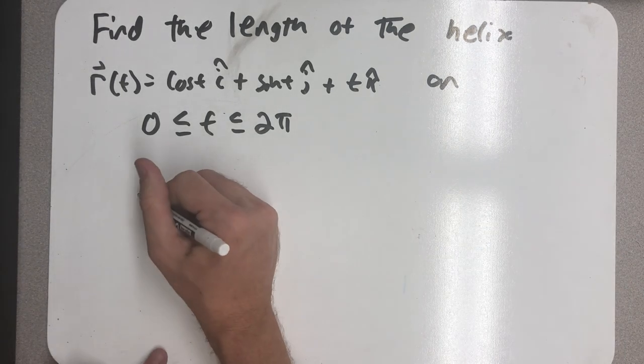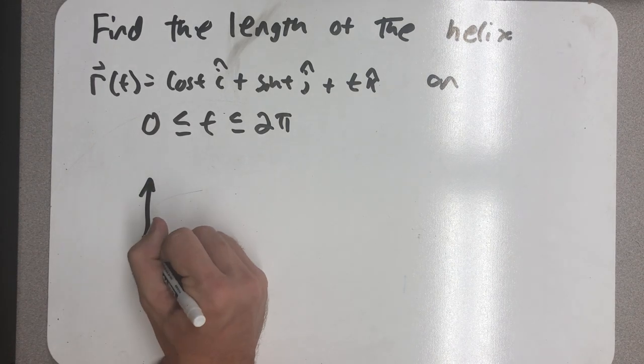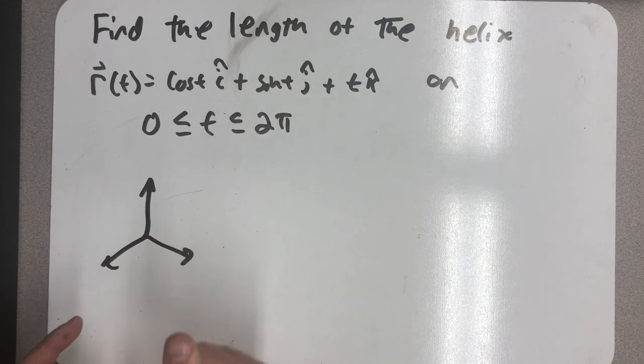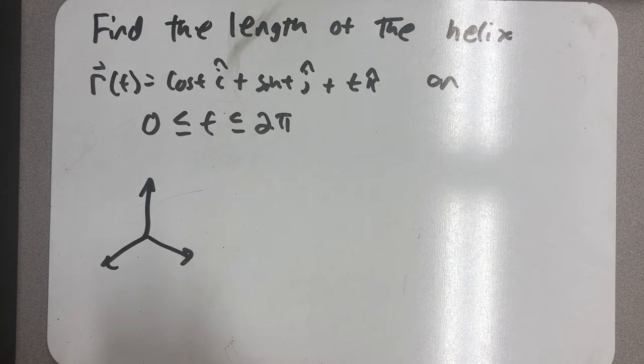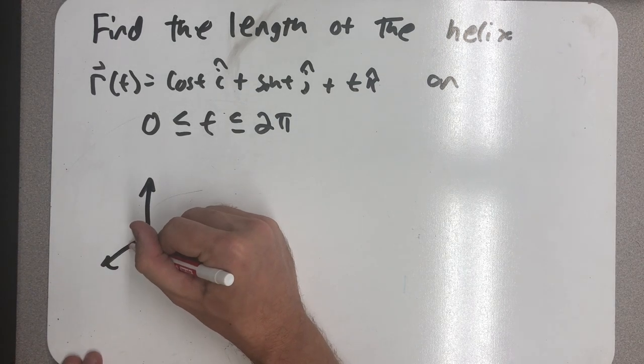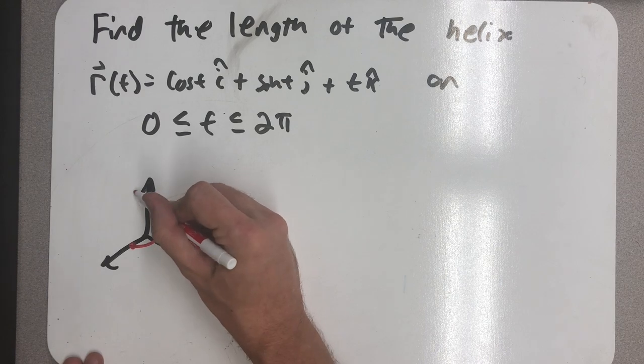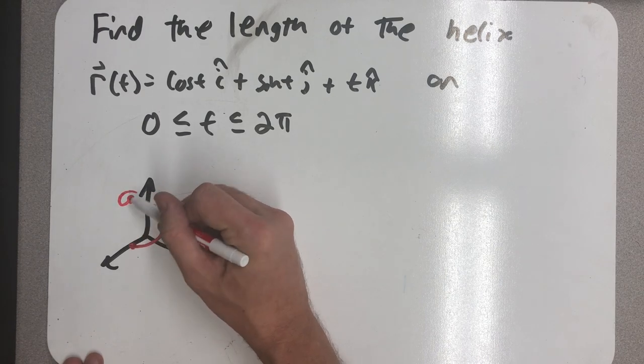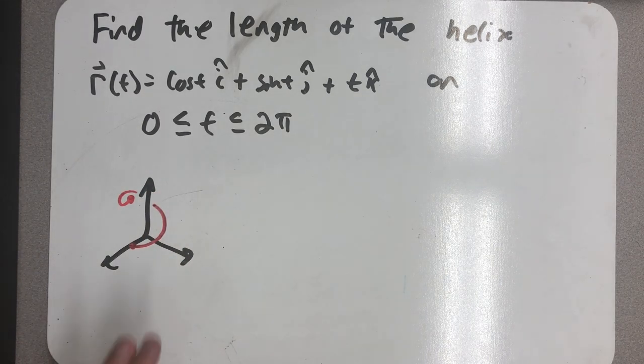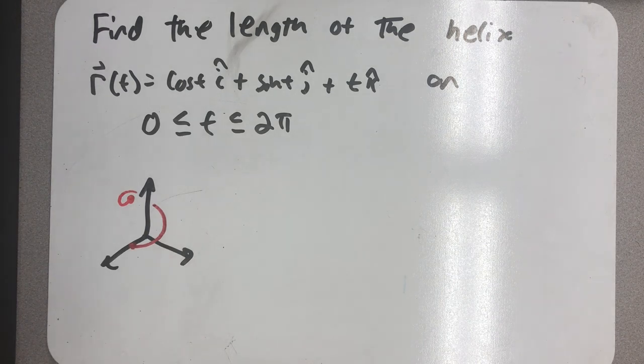So we've graphed this helix once before in a video. It's a helix that starts on the x-axis and then rotates up and around so that it finishes its one helix, one wrapper, right above where it started. Not drawn to scale, but that's what we're trying to find the length of.